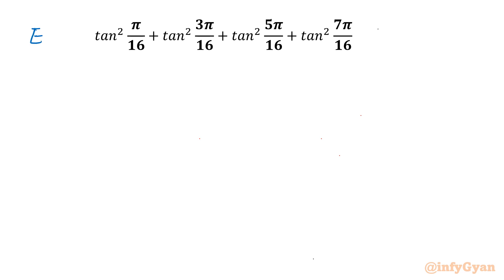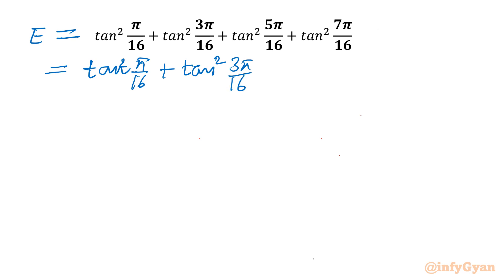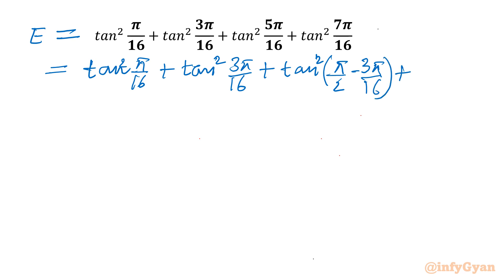I will consider the given expression as E first. I can write our expression as tan²(π/16) + tan²(3π/16). Then the next term I can write as tan²(π/2 − 3π/16), which is 8π − 3π, so 5π/16. And the last term I can write as tan²(π/2 − π/16), which is 8π − π, so 7π/16. Yes, it is correct.